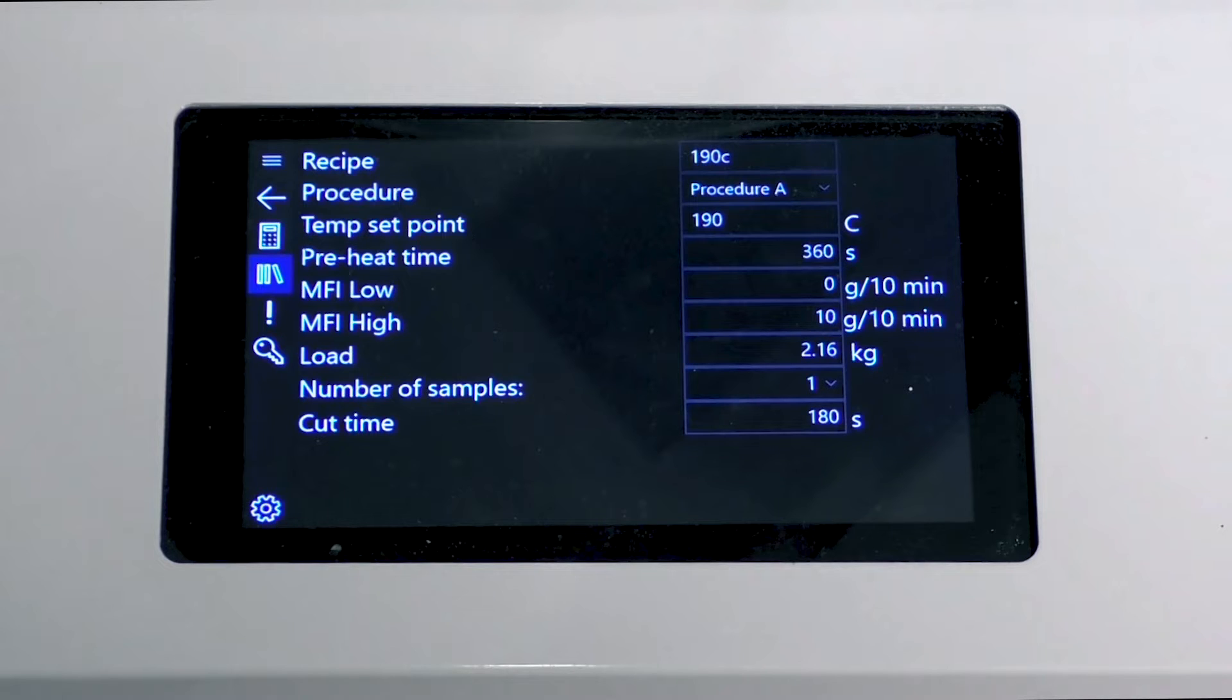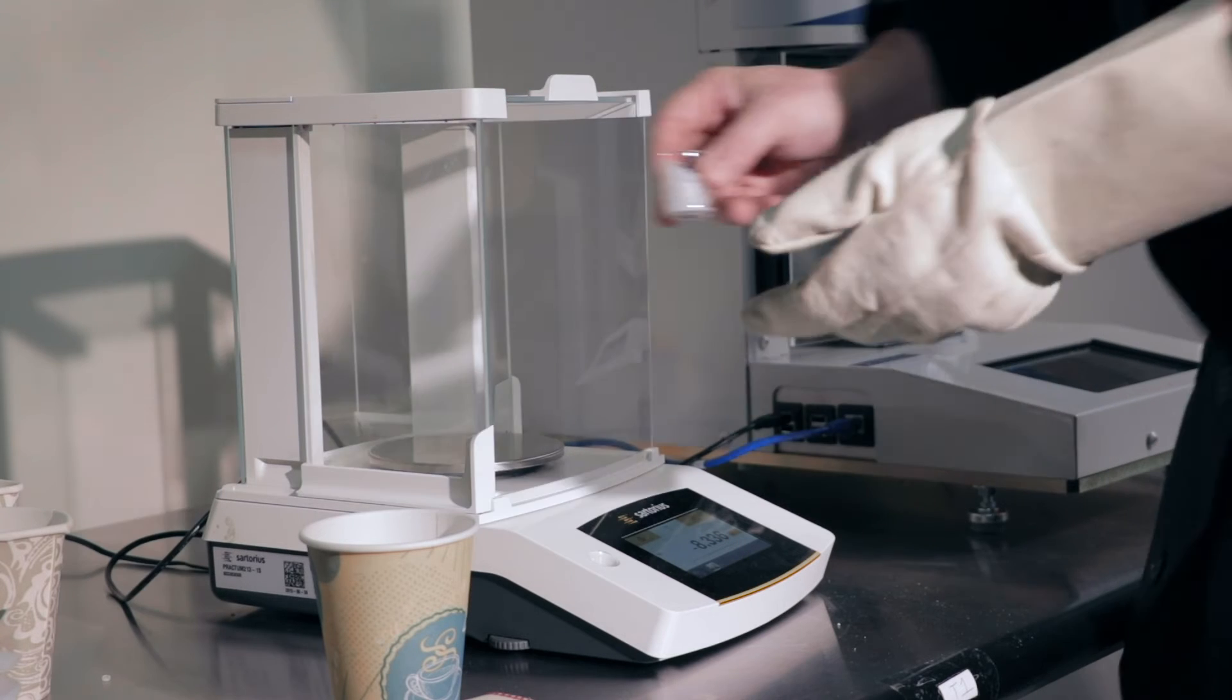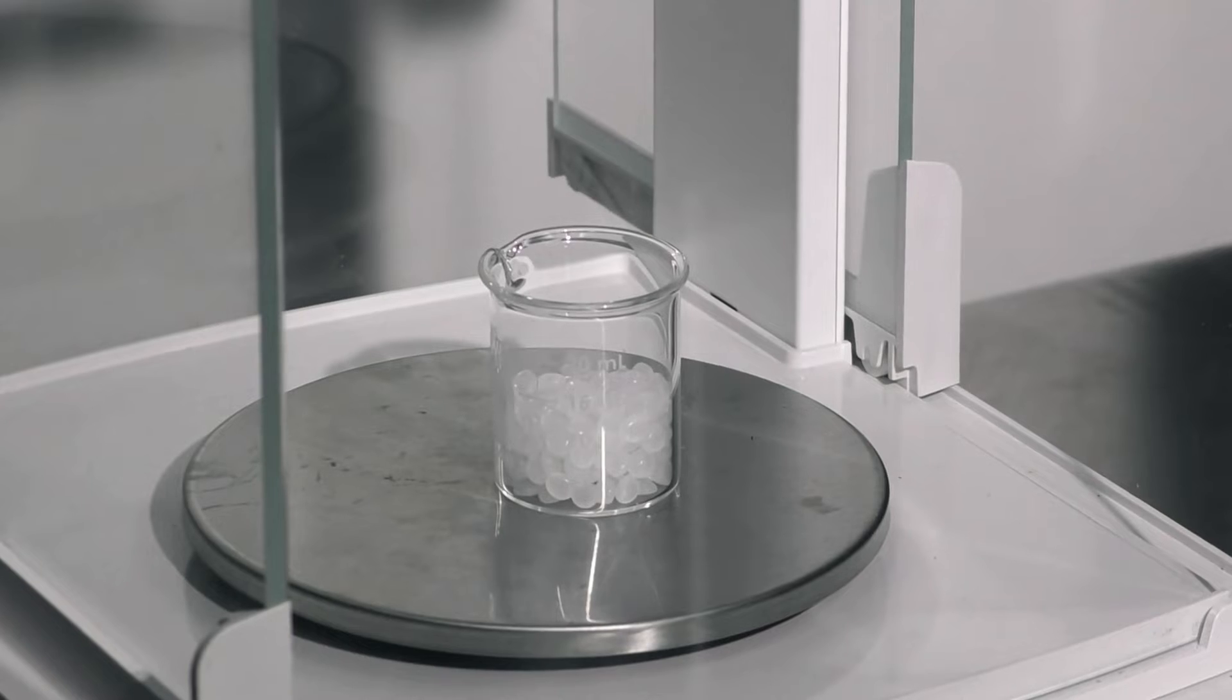The temp set point will determine at what temperature the polymer will be melted. Preheating time will clarify how long the plastic is preheated at the set temperature before the test starts. The cut time will determine how long after the preheating time the operator will wait before cutting the sample. The machine will heat while we continue to prepare for the test.